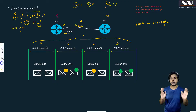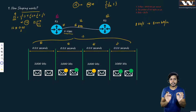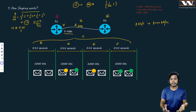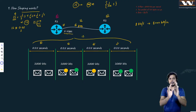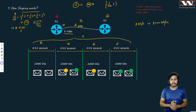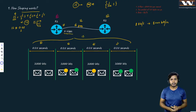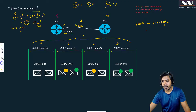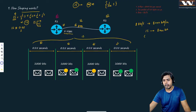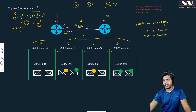This is simple mathematics — I have just divided one second into four parts, and one part is 0.25 seconds. I know that in one second I can send 8000 bits. So in 0.25 seconds, how many bits can I send? I need to multiply 8000 by 0.25.